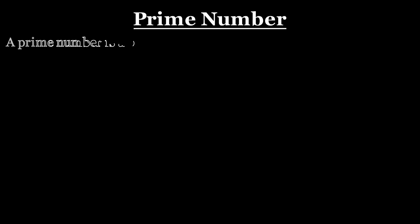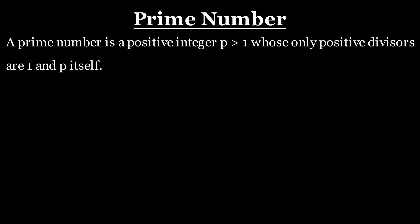A prime number is a positive integer p greater than one whose only positive divisors are one and itself. As you can see, the numbers listed on the screen are prime numbers where you can see the divisors of each prime number below them. So now you can verify that the divisors are actually just one and that prime number itself.